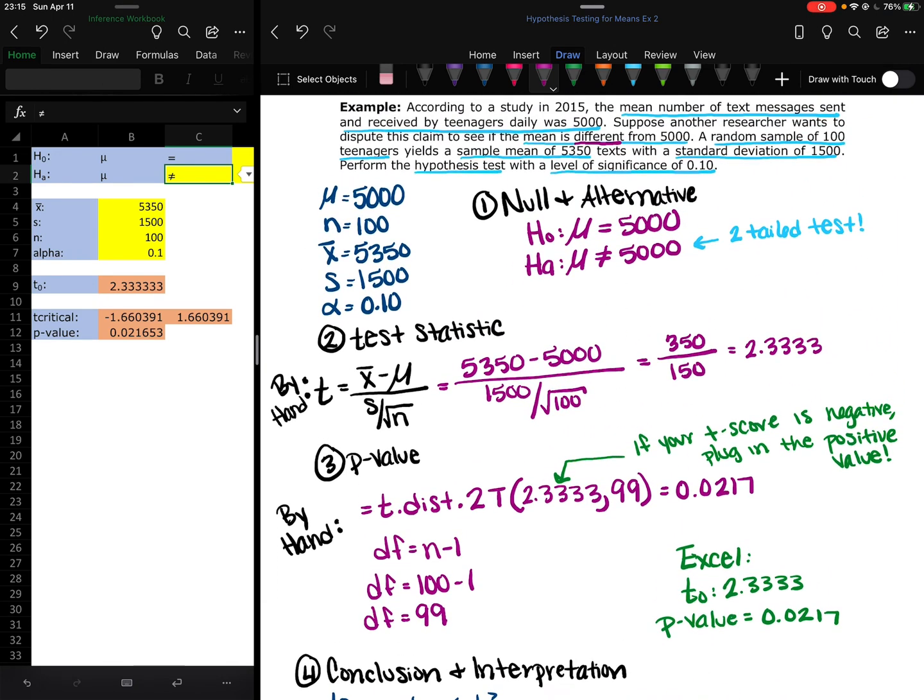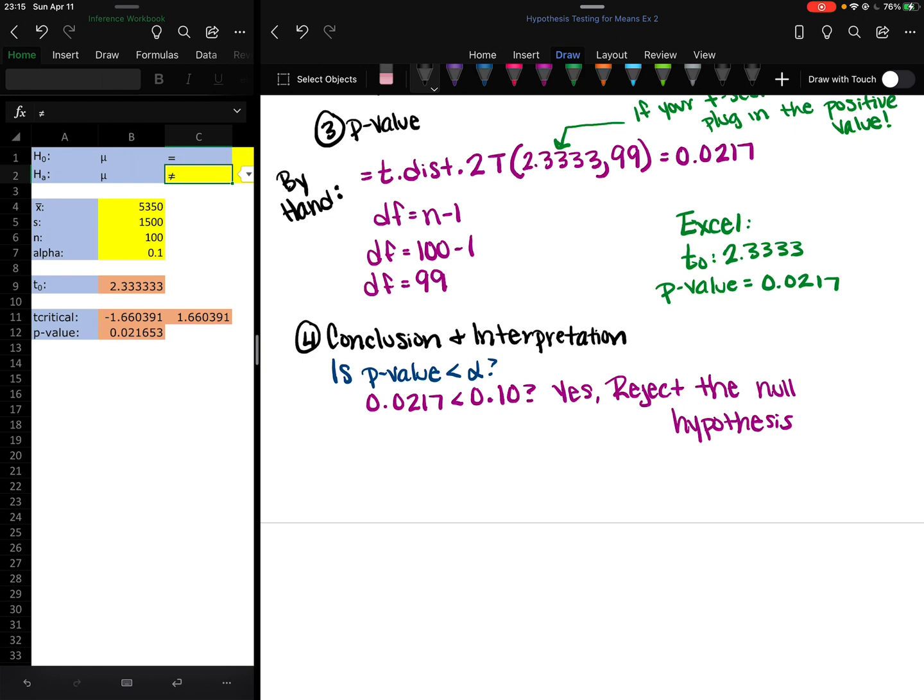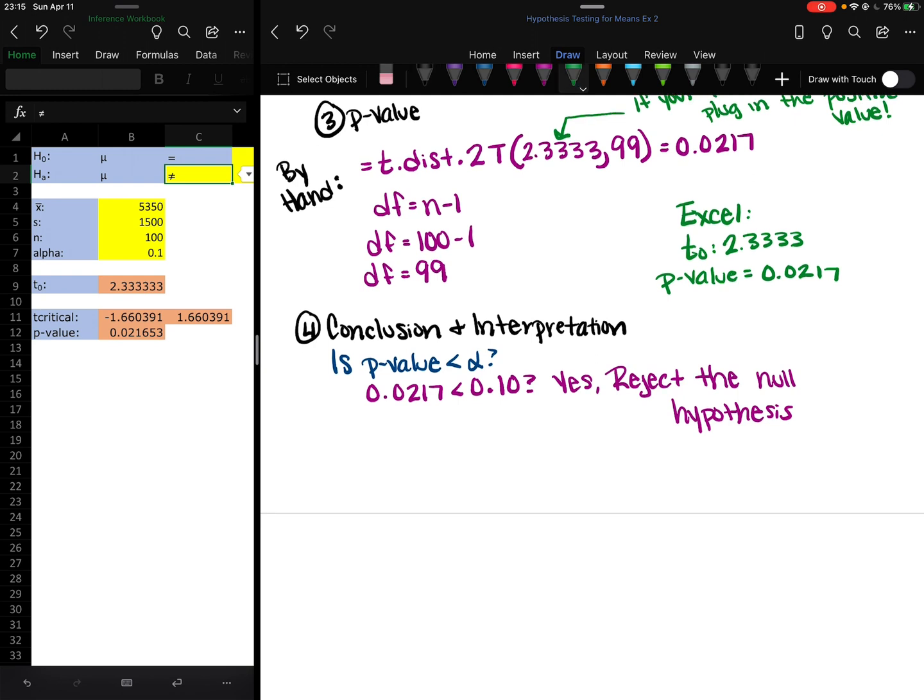So coming back up here, I've rejected the null hypothesis. So this guy is false. This guy is true. I was able to make my claim true. I was able to prove my claim. I did not make it true. I proved it. Mathematically, I was able to prove it. So now my interpretation on what this means, reject the null, what does that mean?